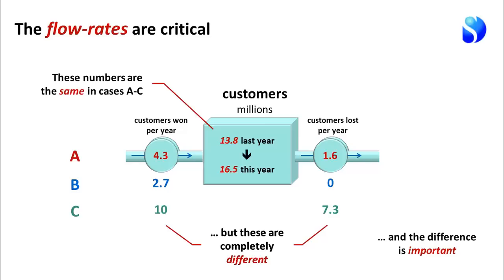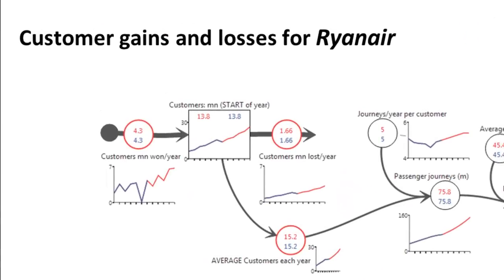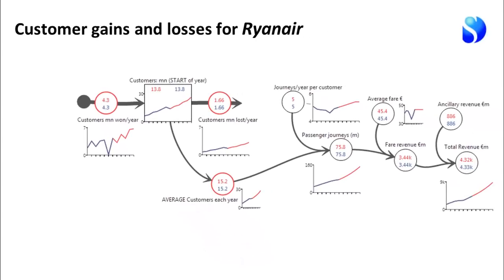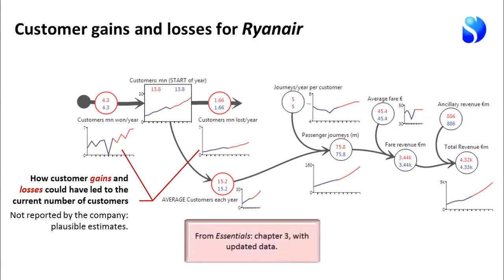It would be fundamentally different if the company had won 10 million customers and lost 7.3 million. At some point the company would simply run out of potential customers. Scenario A is probably somewhat nearer the truth — we just don't know. Here is the time chart version of that same picture: customers being won on the left side of the stock and customers being lost, with those win and loss rates changing over time. This is how customer gains and losses could have led to the development of the number of customers using the airline. This is not reported by any company, but it's fundamental to performance.